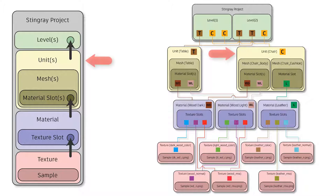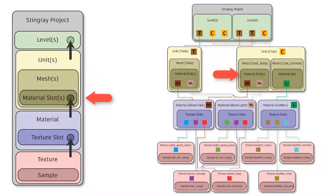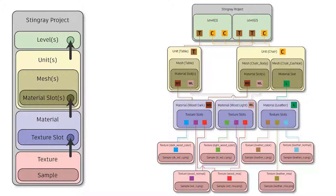That structure allows us to have another object. Our unit chair has the mesh chair body and a material slot. And that material slot — if you notice — is also feeding into wood dark. So now wood dark is feeding one unit and another unit; two units are making use of one material. That gives us an amazing amount of power — we're not linear. We can apply one material to multiple material slots. Any of these materials could be applied; if we wanted to, we could put material leather into this material slot, and it would take on the instructions, reading whatever's in the texture slots.